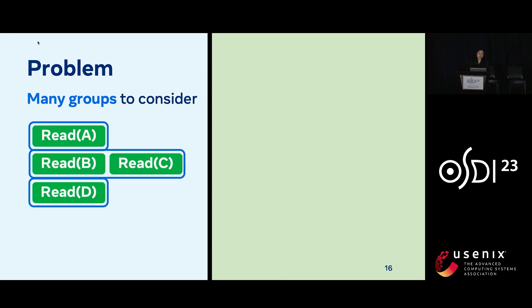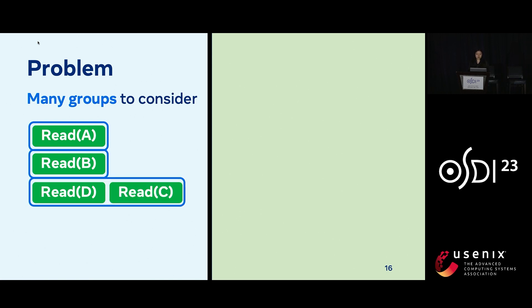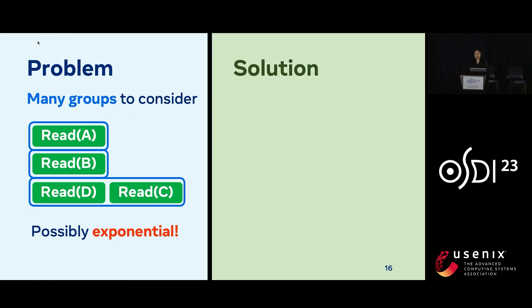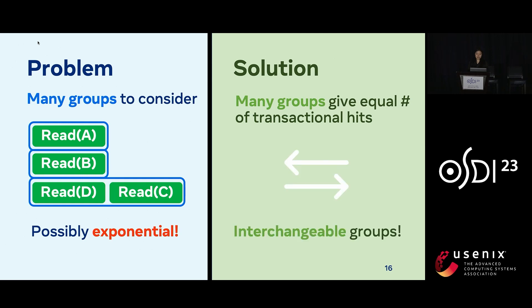The first problem is that there are potentially many groups to consider. For a transaction that first reads A, then has dependent reads B and C, and finally a read to D dependent on B, an alternative grouping would be to group C and D together and have B by itself, which might be desirable if B is easier to cache. We find that even for simple topologies, there can be an exponential number of groups. To address this, we observe that most of these groups give an equal number of transactional hits, and we capture this equivalence with the notion of interchangeable groups, which allows us to reduce the number of groups from exponential to linear.